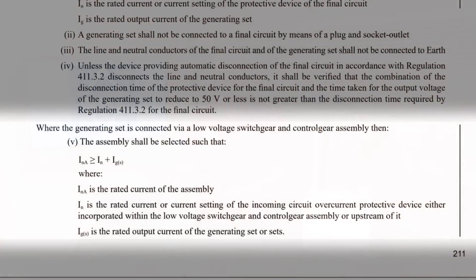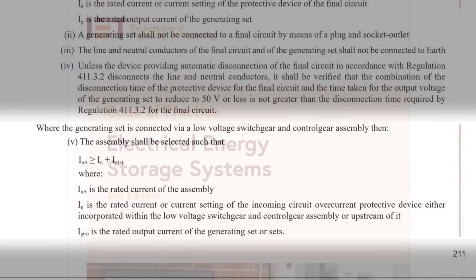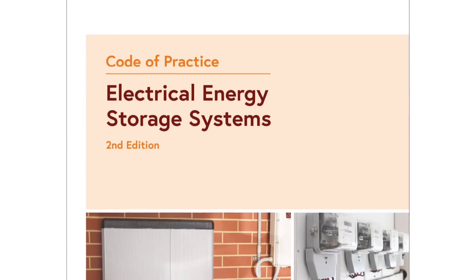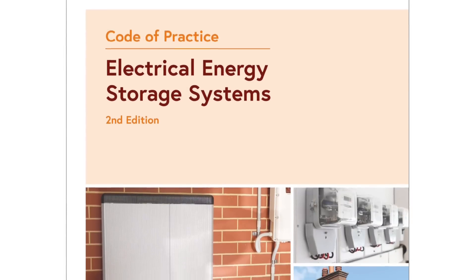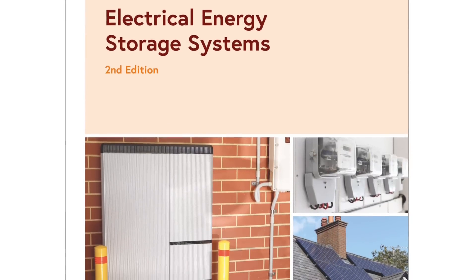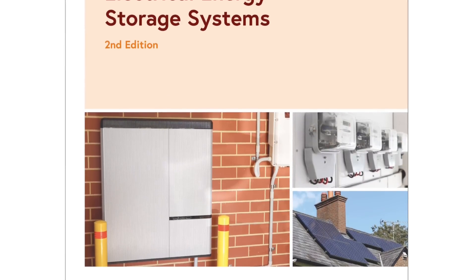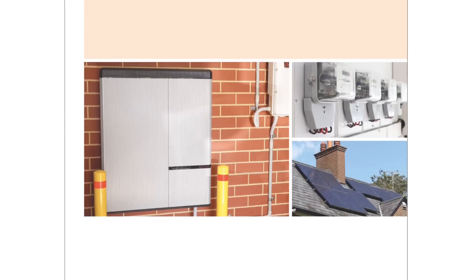The regulation continues with some requirements on how it's to be connected into the system, but the next part we're really interested in is what follows those requirements. This is an additional part of the regulation that was added into the second amendment of the 18th edition in 2022. Interestingly, it's been in the IET Code of Practice for Electrical Energy Storage Systems since 2020, but its inclusion in the regs has brought it to more people's attention.